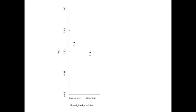This graph shows the performance of dispersal-weighted and unweighted models at classifying whether grid cells are occupied by the common waxbill. The models were constructed using climate variables, and we've used AUC as a measure of model performance — the higher the value, the better the model. The unweighted models actually perform better than the weighted models.